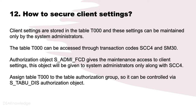How do you secure client settings in the SAP system? Client settings are stored in the T000 table, and these settings can be maintained only by system admins. The table T000 can be accessed through transaction codes SCC4 and SM30. Authorization object S_ADMI_FCD gives maintenance access to client settings. This object is given only to system admins along with the SCC4 transaction code. Assign table T000 to a table authorization group so it can be controlled via the S_TABU_DIS authorization object.